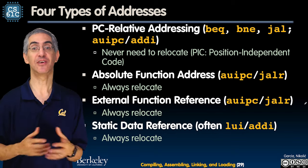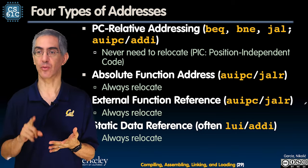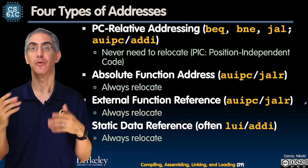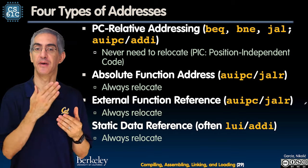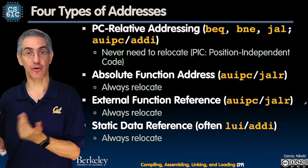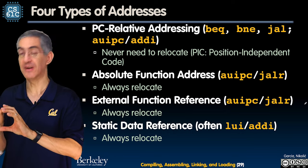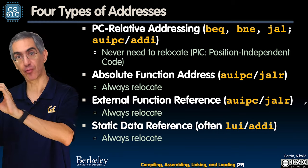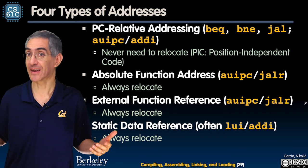There are four types of addressing. We love PC-relative addressing because it's position independent code (PIC) — branch equal, branch not equal, JAL with AUIPC plus ADDI — all relative to the PC, no worries there. The other three require relocation: any absolute function address, external function calls (foo calling bar — I don't know where bar ends up), and any static data relative to the static area, since I don't know where the static area will be.